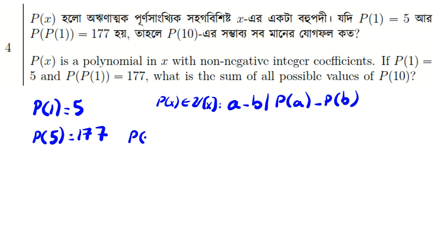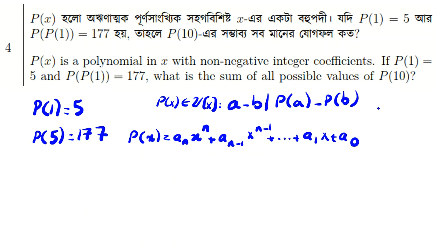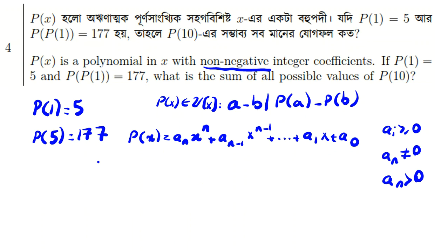We know p of x equals a_n x^n + a_{n-1} x^{n-1} + ... + a_1 x + a_0, and we know all a_i are greater than or equal to 0 because of the non-negative integer coefficients condition. Since the degree is n, a_n is not 0 — if a_n were 0 it would be a lower degree polynomial. Because all coefficients are non-negative, the leading coefficient a_n is greater than 0. We want to find p of 10.